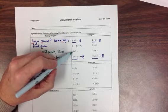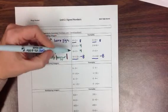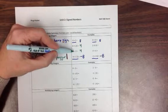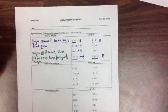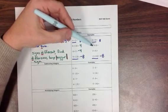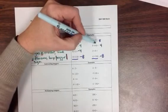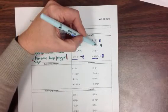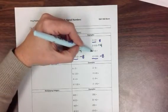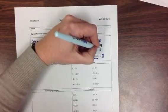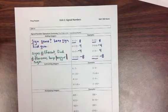Down here we have the same situation. The numbers have different signs, so we're going to find their difference. But since the negative number is now the one with the larger absolute value — we have a negative 6 — our answer will be negative. Over here the signs are different again, so the answer will be some kind of 4. The larger absolute value is negative, so the answer is negative. And with this problem, the signs are different, but the one with the larger absolute value is positive, so our answer is positive.